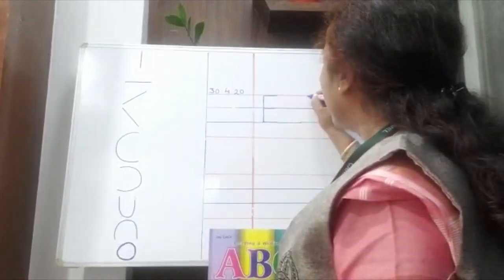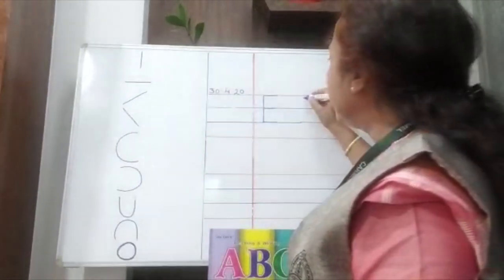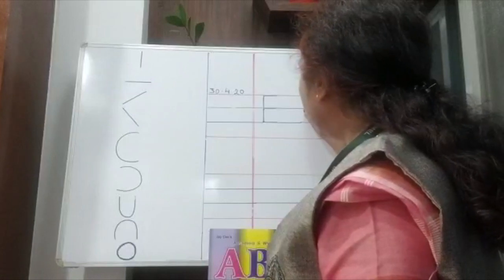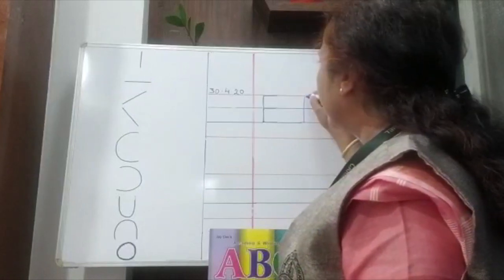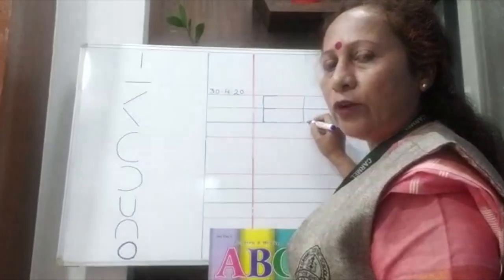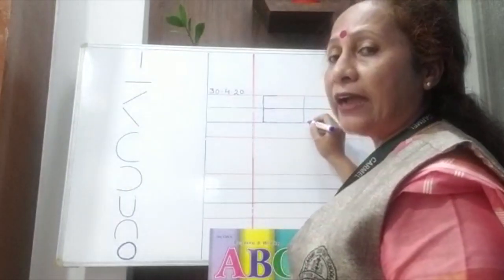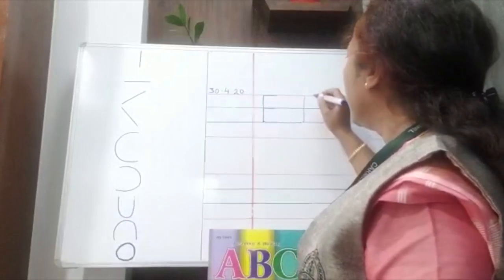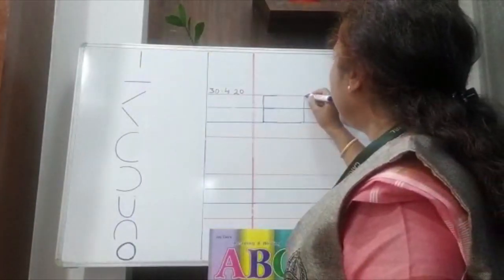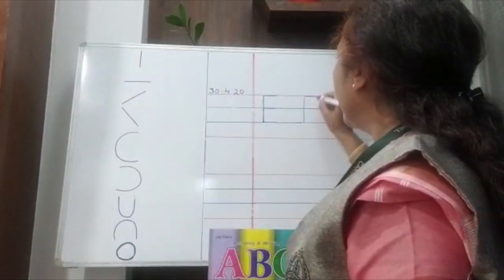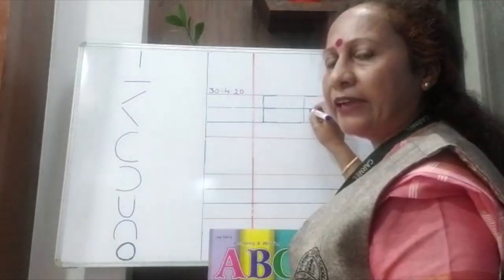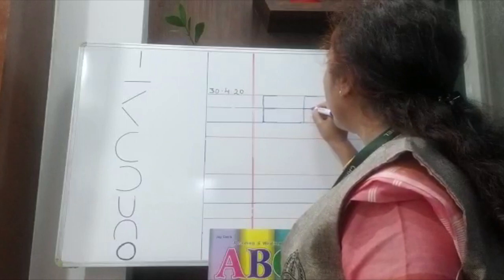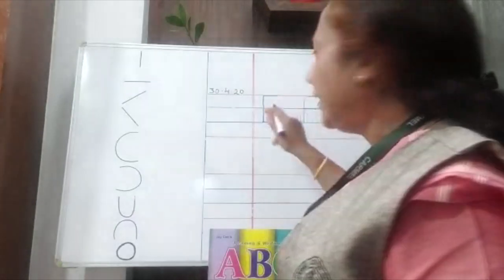Next, come to F. How to make F? From red line to second blue line, you have to make one standing line. And for F, you have to make two sleeping lines: the first is on the red line, and the second sleeping line is on the first blue line. In this way, you have to make F.